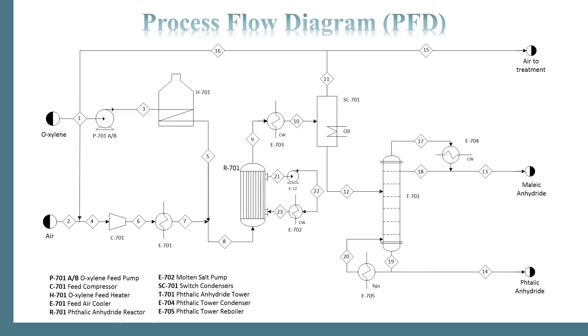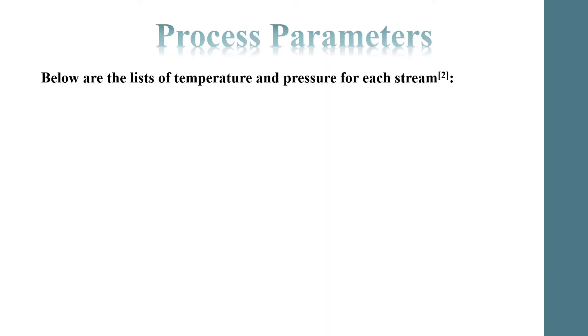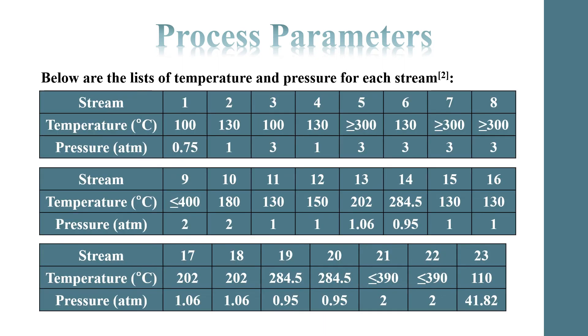This is the process flow diagram of our selected process. The process parameters below are the list of temperature and pressure for each stream, from stream 1 until stream 23.